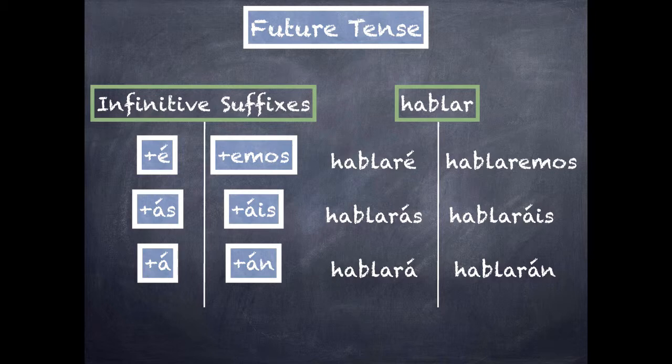We'll go into a few more uses later on, but let's learn the conjugations first. With the future and also with the conditional, which we'll learn later, we use the infinitive. So our example here is hablar. So we use the infinitive and then we add to it suffixes.